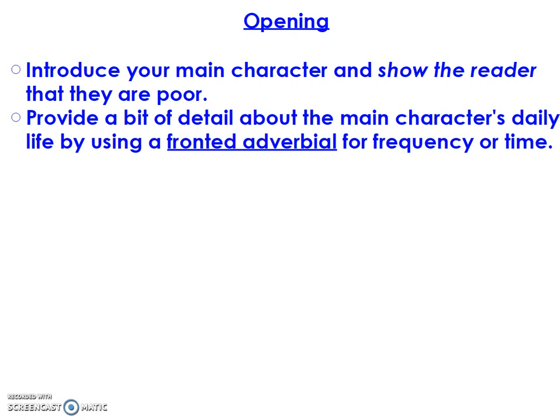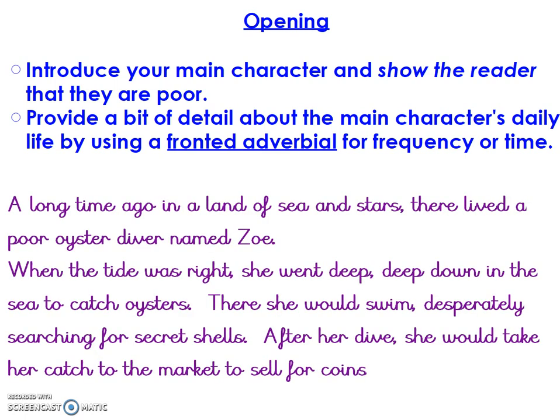Now I've put this down in writing: 'A long time ago, in a land of sea and stars, there lived a poor oyster diver named Zoe. When the tide was right, she went deep, deep down into the sea to catch oysters. There she would swim, desperately searching for secret shells. After her dive, she would take her catch to the market to sell the coins.' I've introduced my main character, shown that they're poor, and provided detail about daily life. You can see the fronted adverbials — 'when the tide was right' is about time, and 'after her dive' is another time one.